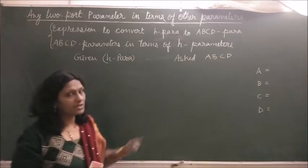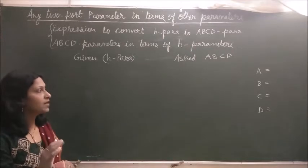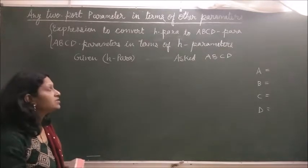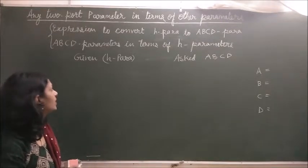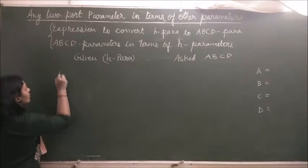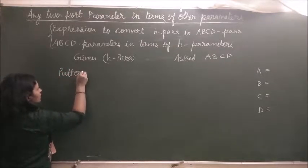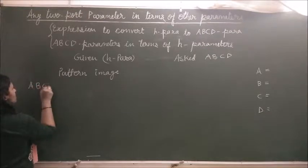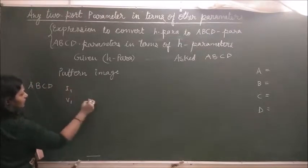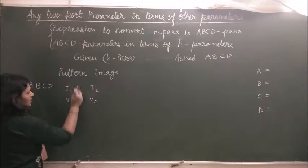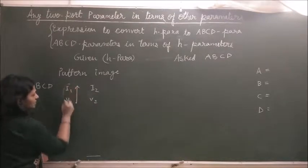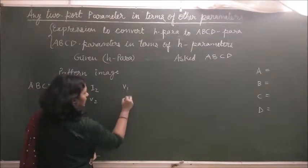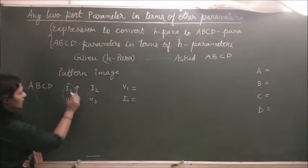Now, how to write the equations and how to remember them? There are six parameters and it is difficult to remember all the equations. So I am giving you a pattern image to help you remember. For the first parameter, ABCD, write down V1, I1, V2, I2. Start from V1 and move in this direction — this makes V1 and I1 the dependent variables on the left-hand side.